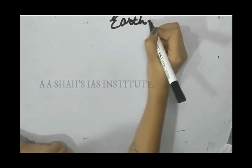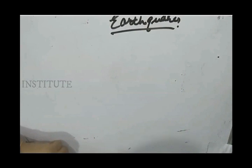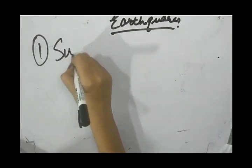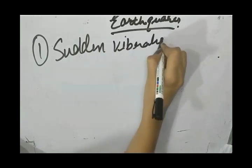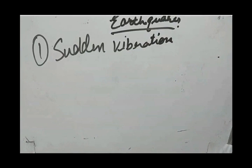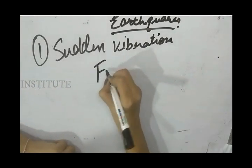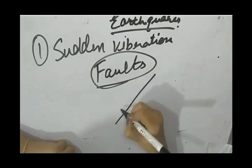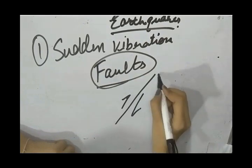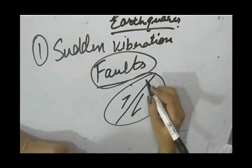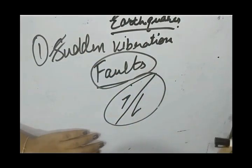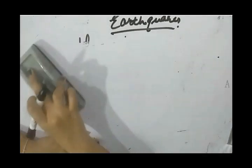Earthquakes, or seismicity. An earthquake is a sudden vibration on the surface of the earth. How does an earthquake originate? In the earth, there are many faults — faults are basically zones on the earth along which movement is possible. If a movement is possible around certain zones and the earth moves along that zone, there will be a sudden release of vibrations and energy, and this release of energy and vibration is called an earthquake.